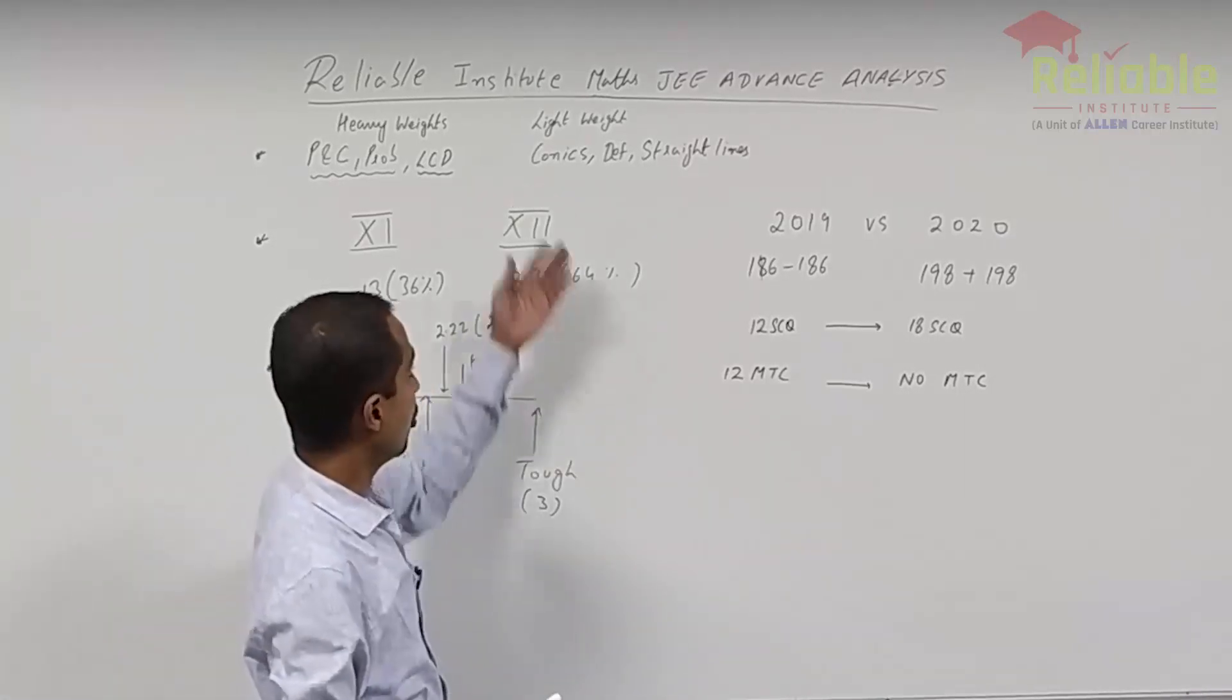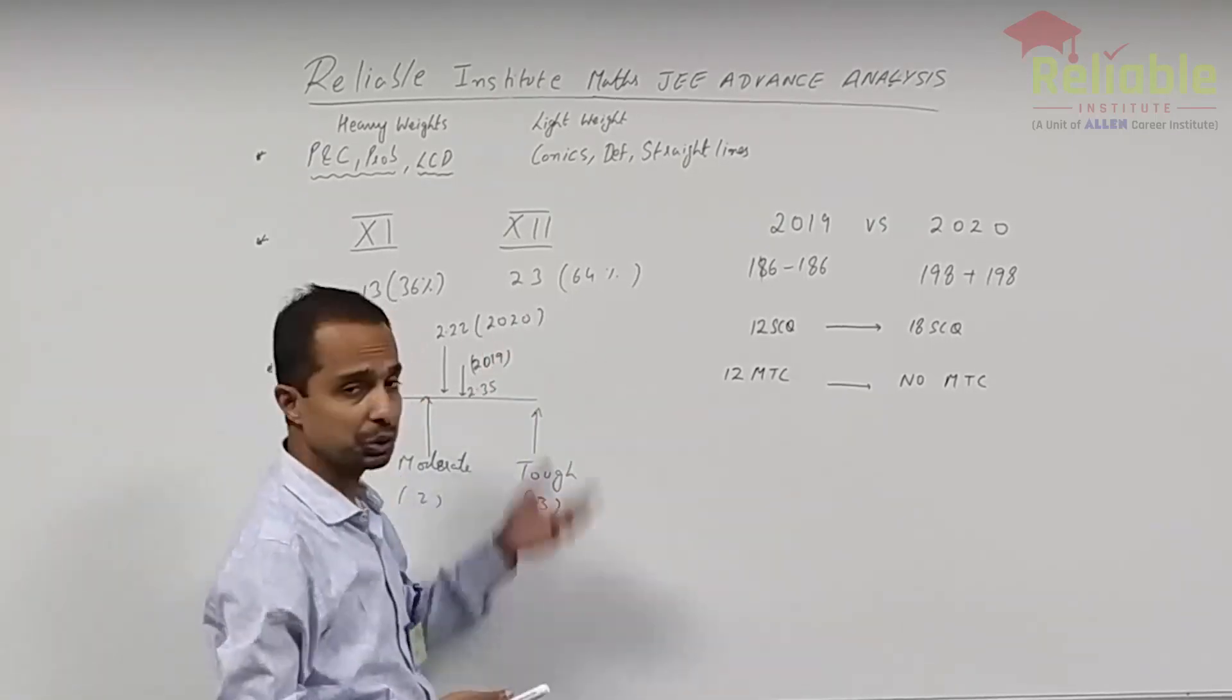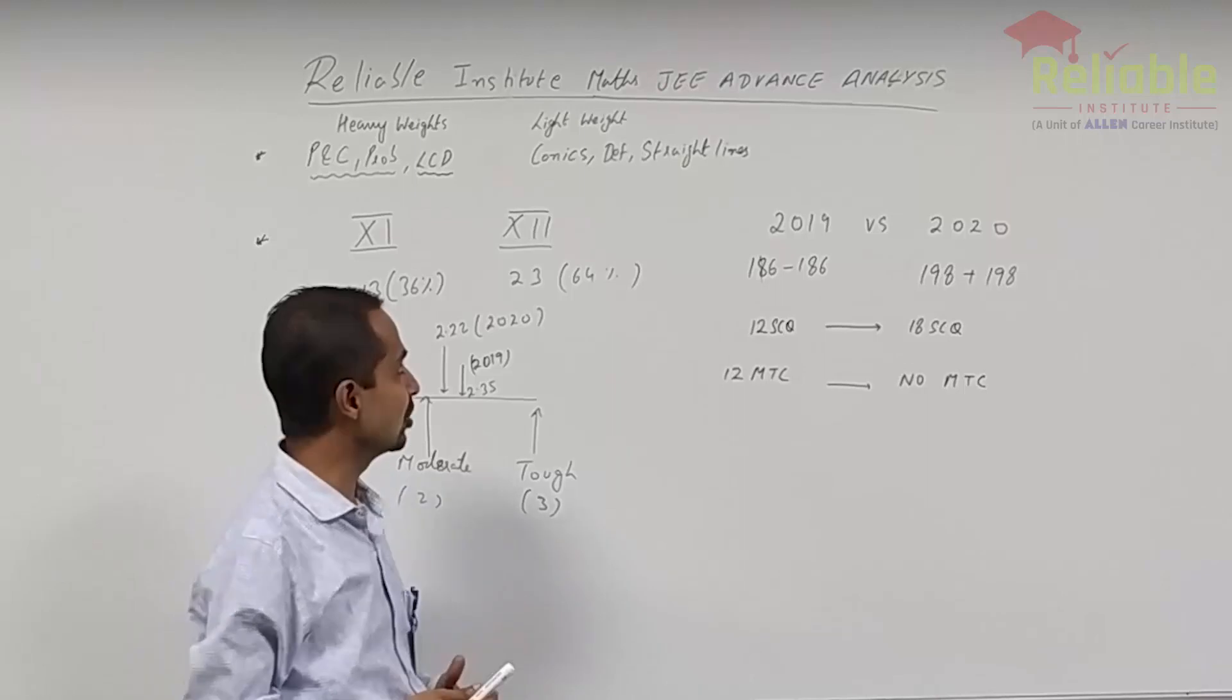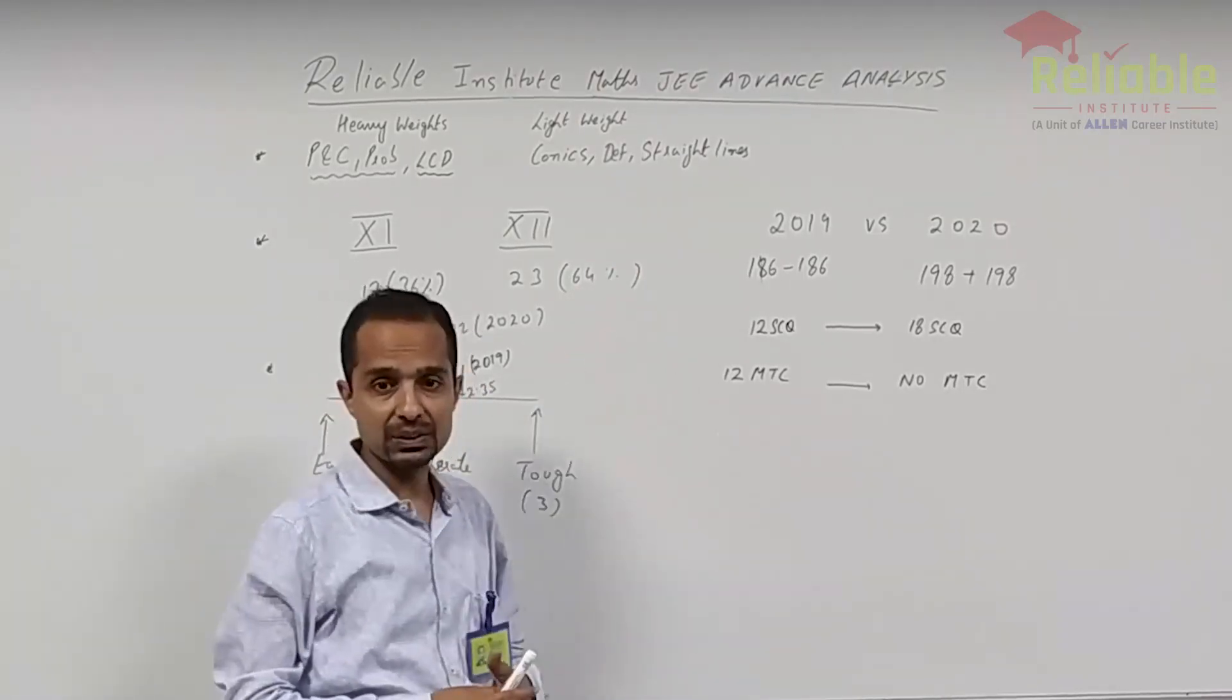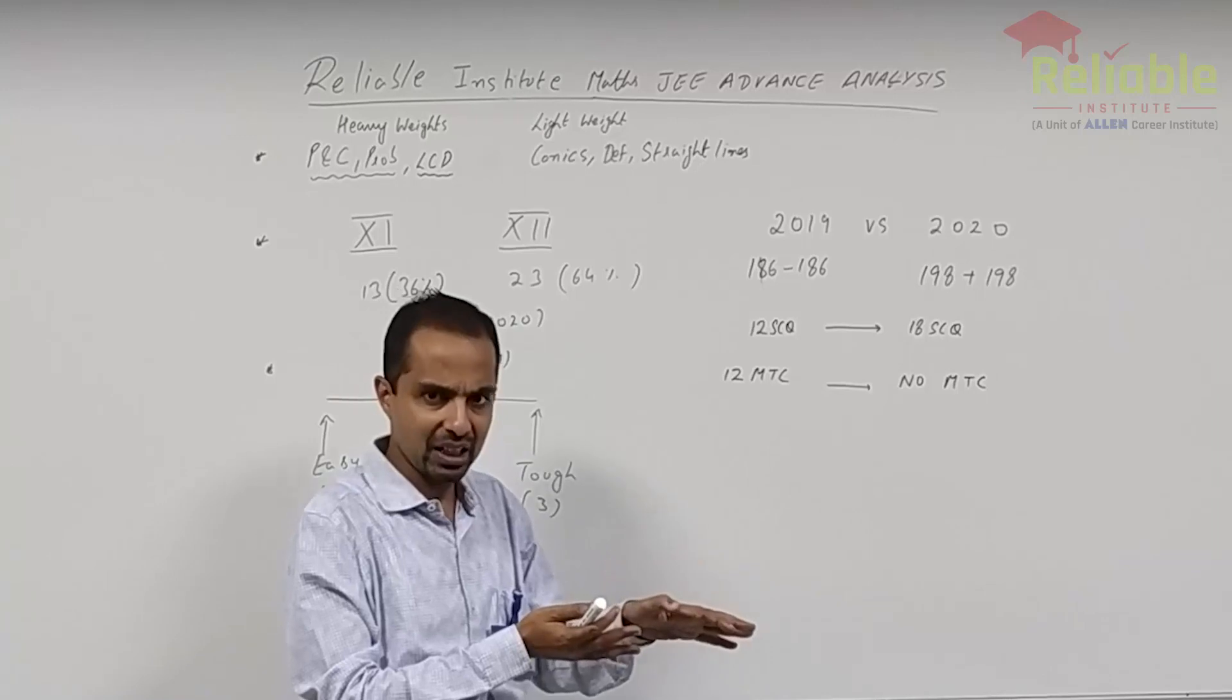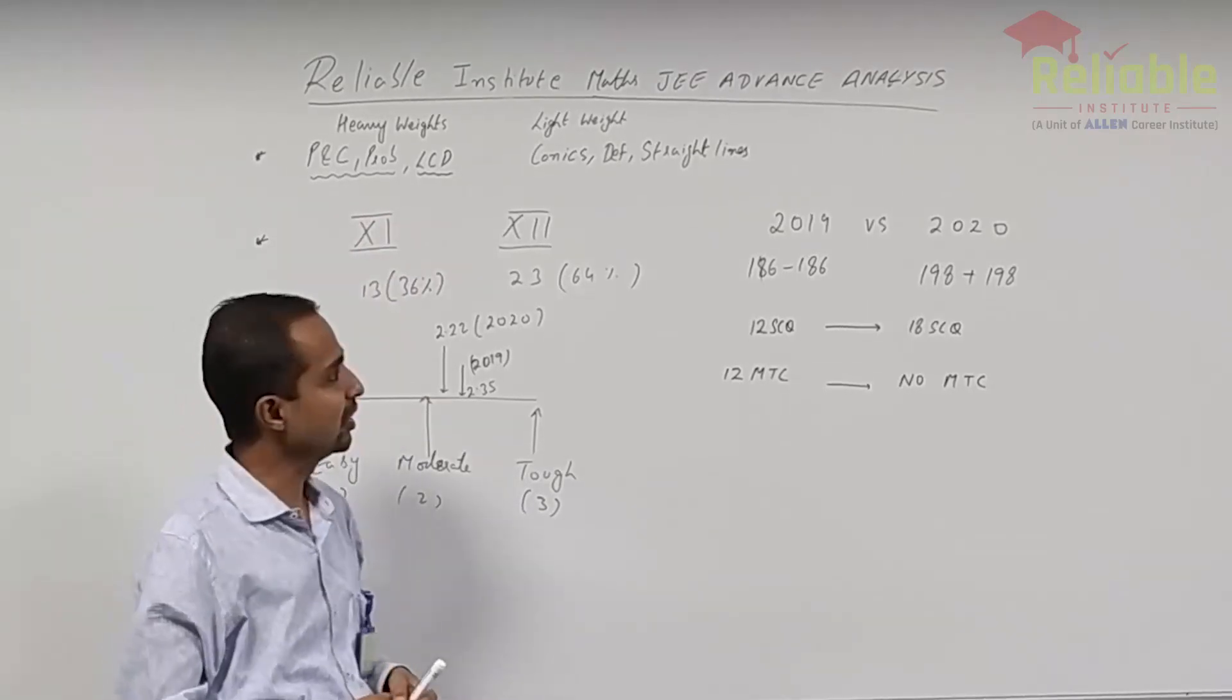On whose cost? On cost of conics. Typically, from conics, we can expect four questions. But this year, two questions appeared. Definite integration. This year, three questions appeared. Typically, four questions appear. So not a great loss, but a tad lower. Straight lines, it was not there. And circles, only one question was there. So these were the four chapters which typically come on a higher weightage, were little less. And who took the benefit of it? These three chapters took the benefit of it.